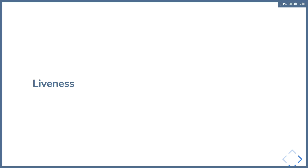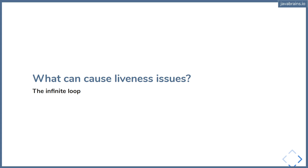So what causes liveness issues? There are a bunch of things that can cause it, and it doesn't really apply to concurrent programming necessarily. For example, you can write an infinite loop — there can be a bug in your code, you have a while-true and no exit condition, so you have an infinite loop. If that infinite loop is stuck waiting for something else and not doing anything, then that is a liveness issue. So this is liveness even without talking about concurrency.